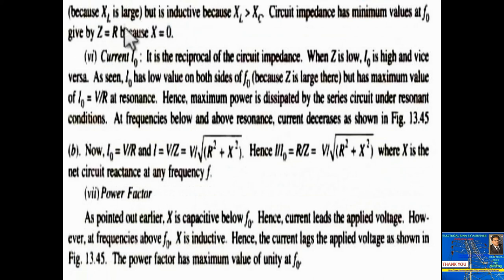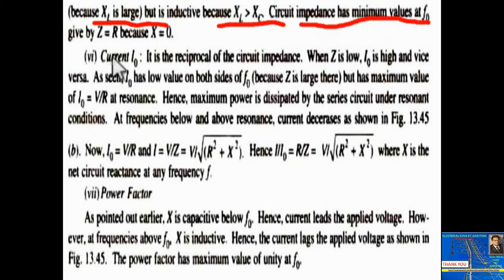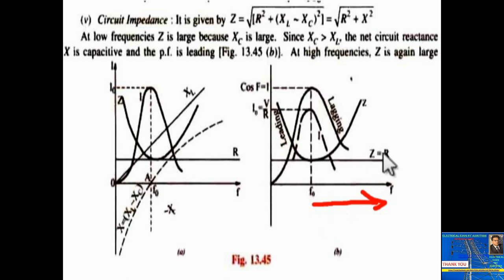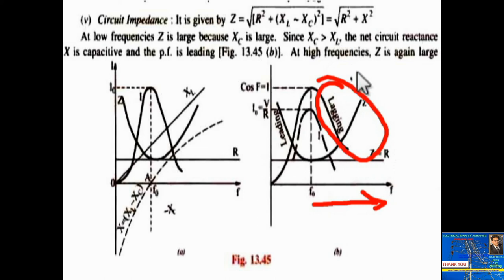If frequency is large, XL will be large and XL > XC. Circuit impedance has its minimum value at F₀ given by Z = R because X = 0. When frequency goes above the resonant frequency, XL becomes greater than XC, Z increases, its nature becomes inductive, and power factor becomes lagging.